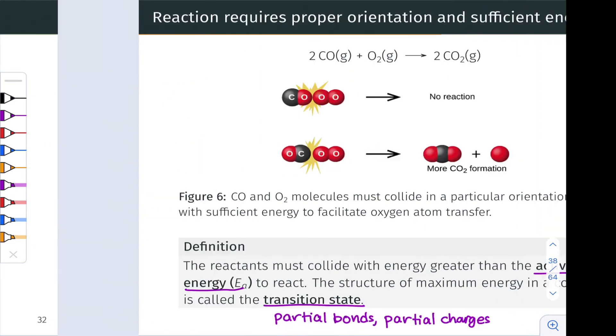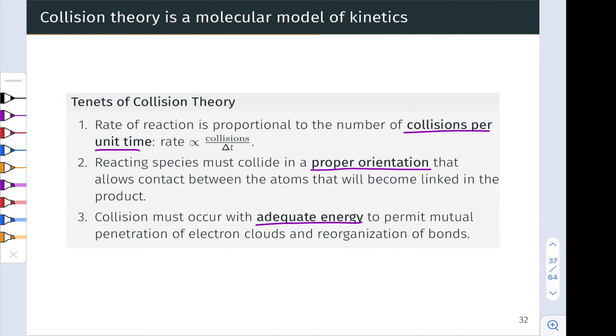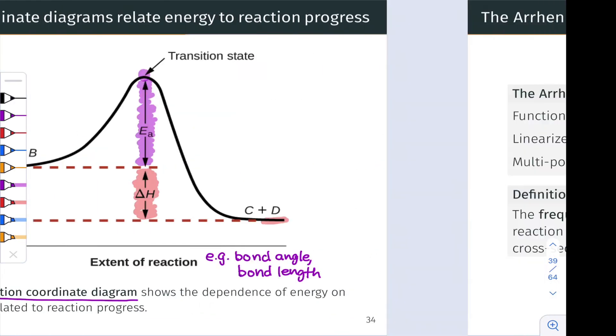If we back up briefly now to the tenets of collision theory, tenet one tells us that the rate of reaction is proportional to the number of collisions per unit time. And this intuitively should be related to temperature, since the higher the temperature, the faster the average speed of the molecules, the greater the average kinetic energy, and presumably the more frequently molecules are colliding with one another. So the rate constant and the rate of reaction should depend on temperature. An equation and model known as the Arrhenius equation expresses that dependence of the rate constant on temperature in equation form.